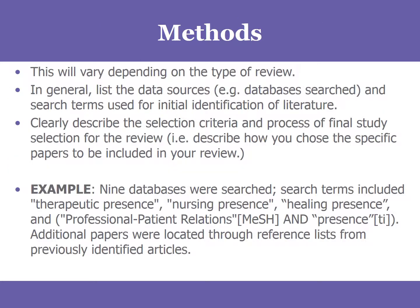Then come the methods, and that depends on what type of review you have. If you did a systematic review, there's going to be really detailed information in the methods about exactly what your criteria were for deciding on the studies — what types of studies were included, for example whether you only included randomized controlled trials or any clinical or interventional study, what databases did you search, and over what timeframe. The example below talks more generally about the databases and terms that were used and how papers were found, but this was not a systematic review, so it's not going to have as much detail.